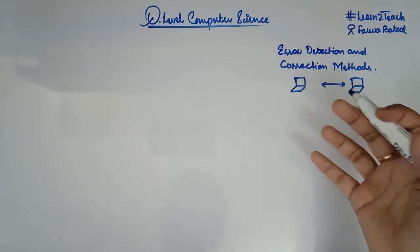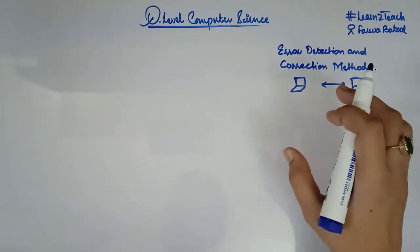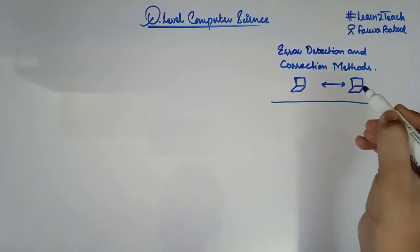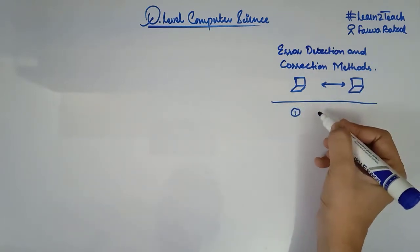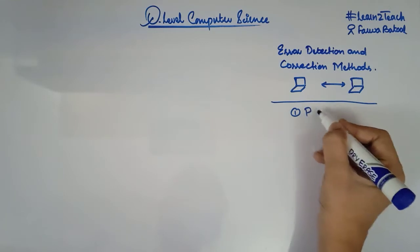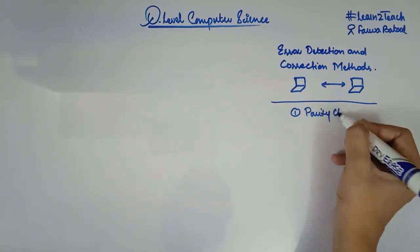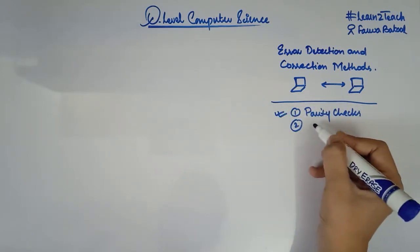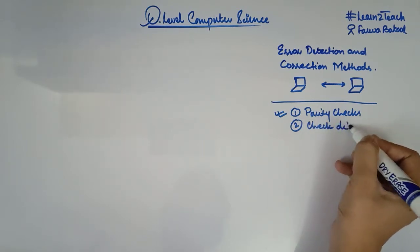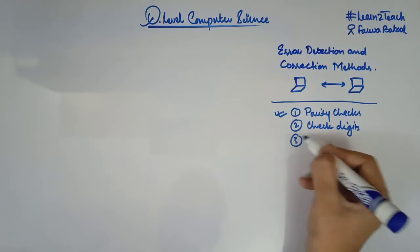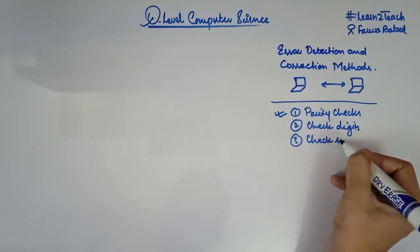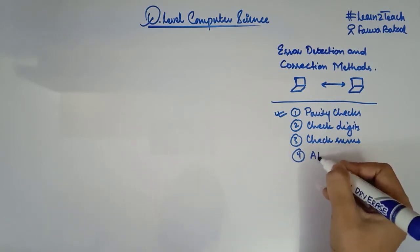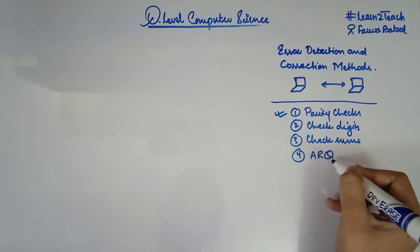We have four methods we are going to study under this topic. The first is parity checks, which we will cover in this video. The second is check digits, the third is checksums, and the fourth is ARQ — Automatic Repeat Request.